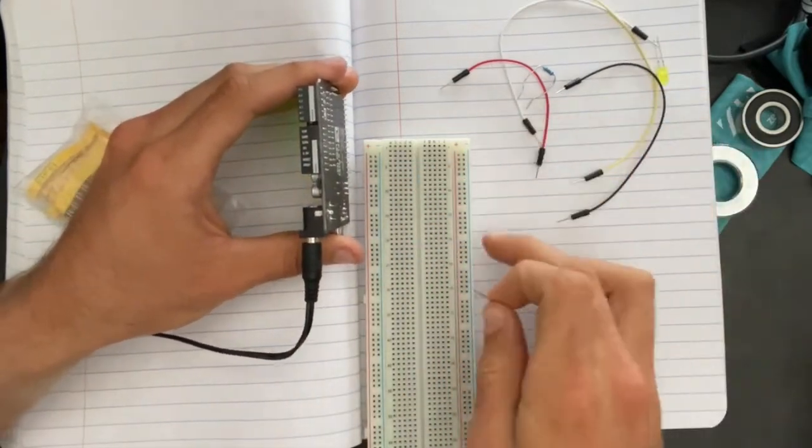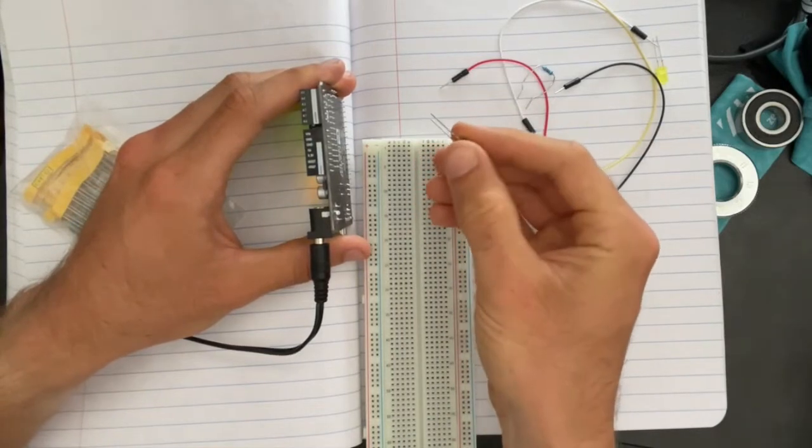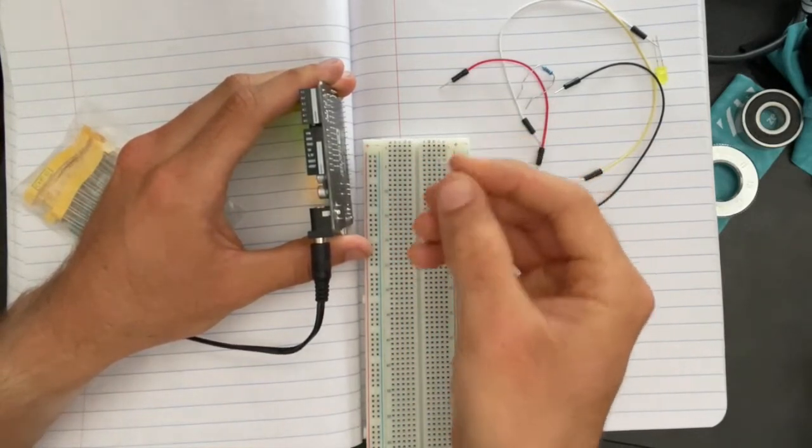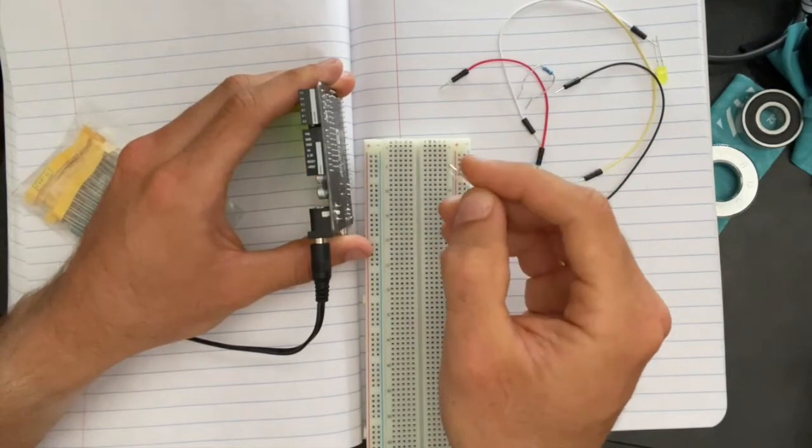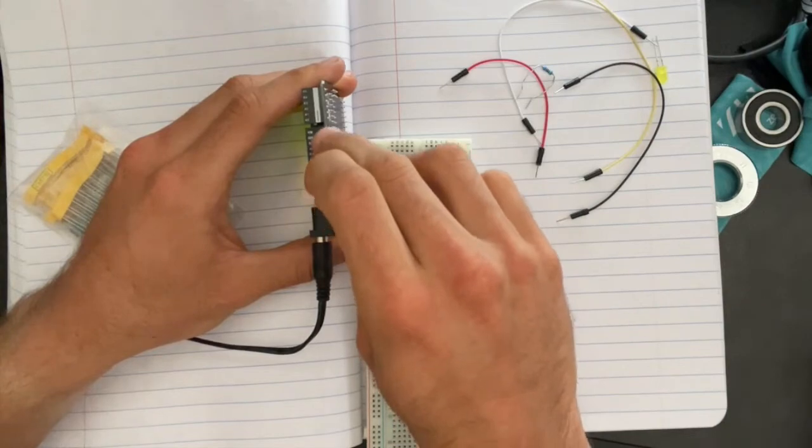Something I want to show you before we do anything on our breadboard is how these pins work on these LEDs. Because an LED is a light emitting diode, diodes care about the direction of current. The longer foot needs to go to positive or the higher voltage, so in our case from 5 volts to ground.